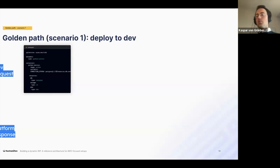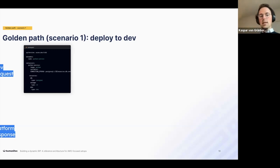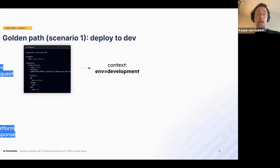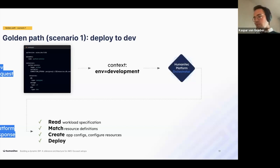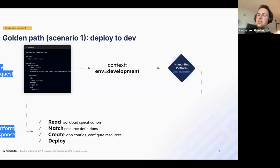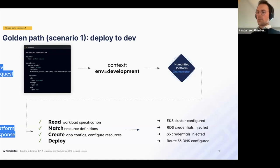We've applied a change to our little Python service — Git push. Our workload specification also runs because it's always being sent. We now have the context: environment type equals development. We hit the orchestrator, which runs RMCD — reading the file, matching the context, creating the config, configuring the resources (in this case just reaching out since resources are already there), then deploying. Clusters are configured, everything is wired, and everybody's happy.